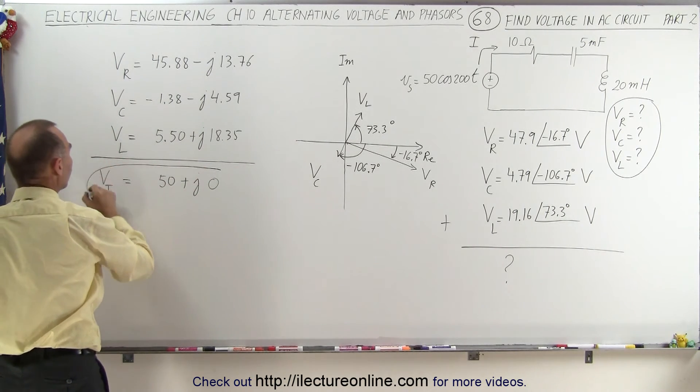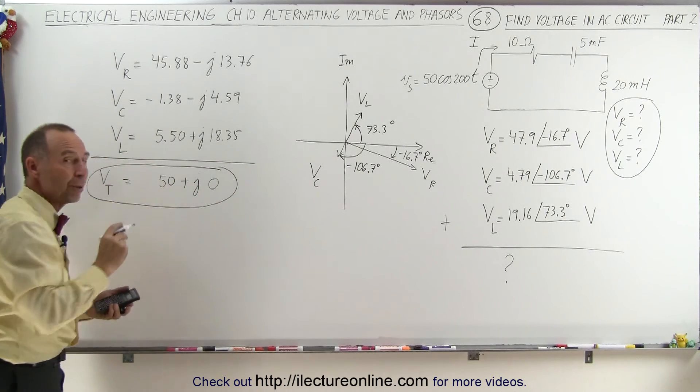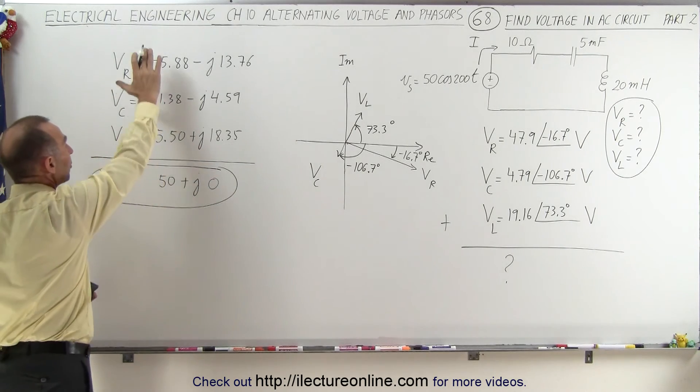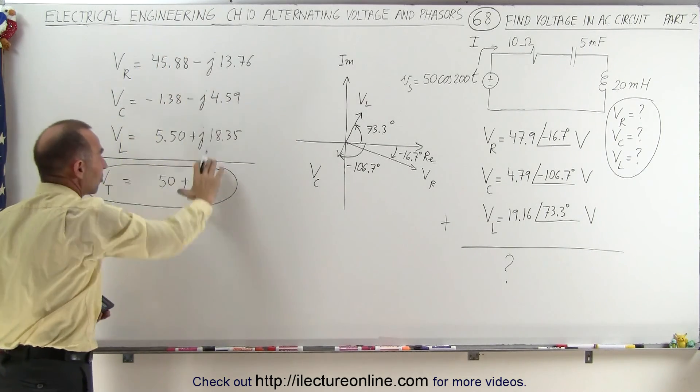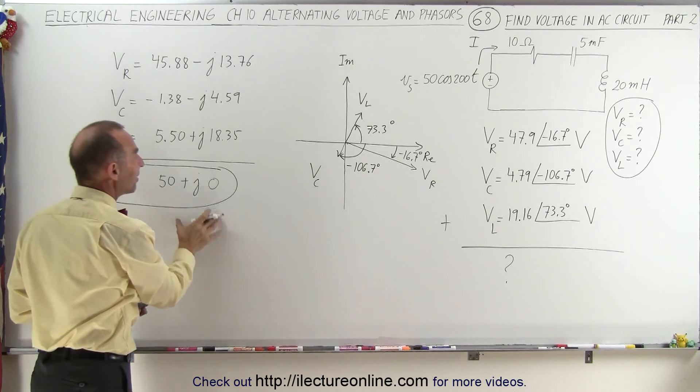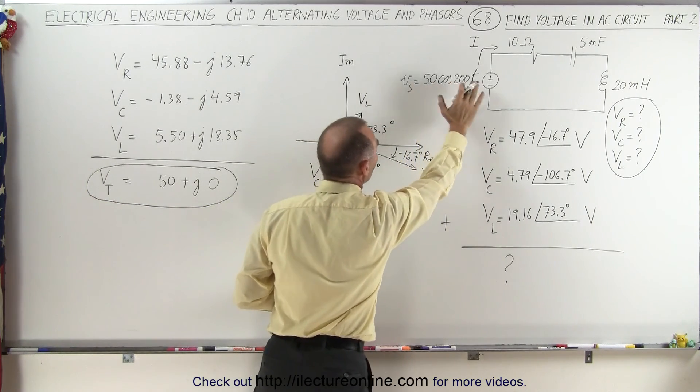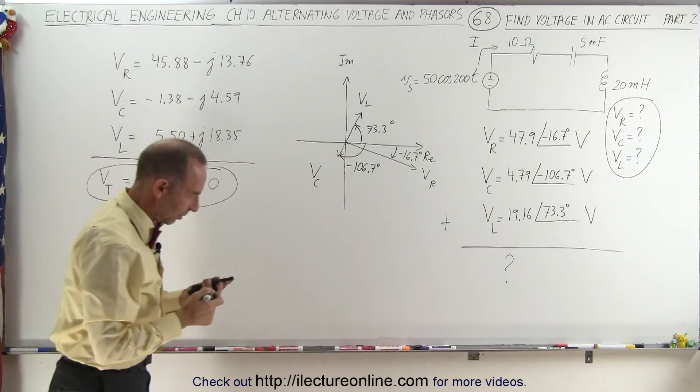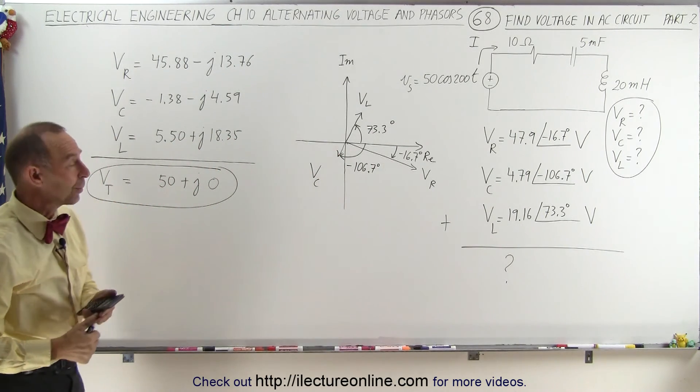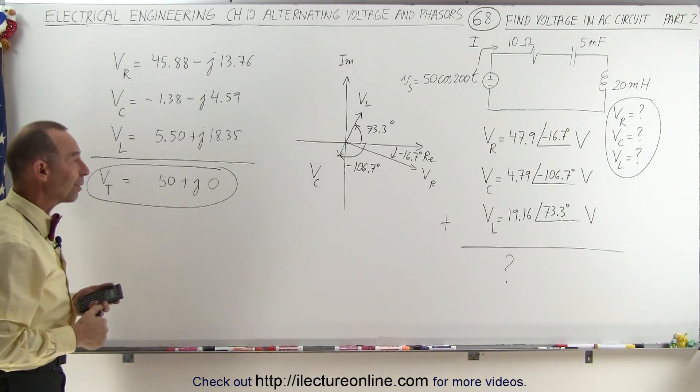So notice that the total voltage across all three components, when you add them up by only adding the real parts and the imaginary parts together like that, you get the exact same voltage as the source, which is 50 volts with a zero phase angle. So you can see that things do add up correctly if we follow the right process.